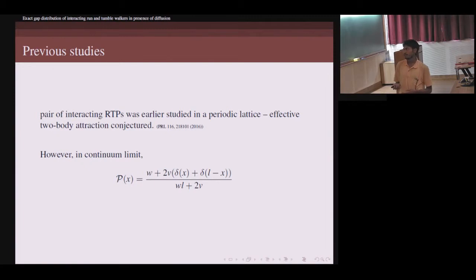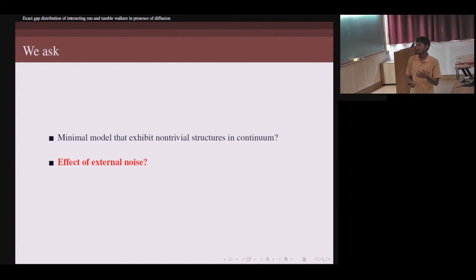The problem is when you take the continuum limit, when the lattice spacing tends to zero and number of lattice sites tends to infinity, in this limit the structure actually vanishes. In the continuum limit, either the two particles are on top of each other or they have no interaction, no spatial dependence. So really in some finite length scale nothing interesting is happening in this model. We ask what is the minimal model that exhibits some non-trivial spatial structure in continuum, and in particular what is the consequence if we see the effect of external noise.